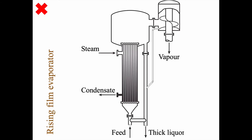Here is a schematic view of the rising film evaporator. The feed comes in at the bottom, steam comes in and exits as condensate, and both the liquid and the created vapor rise up into a dome-like structure and go into a phase separator. Some liquid comes out directly, and some liquid that follows the vapor gets caught and flows back, so you get thick liquor out at the end.